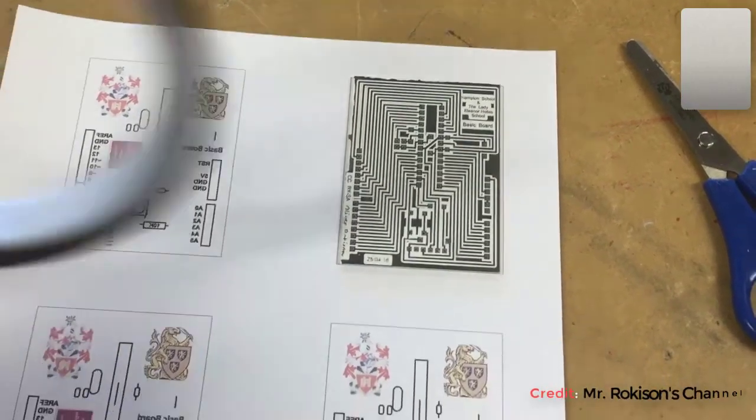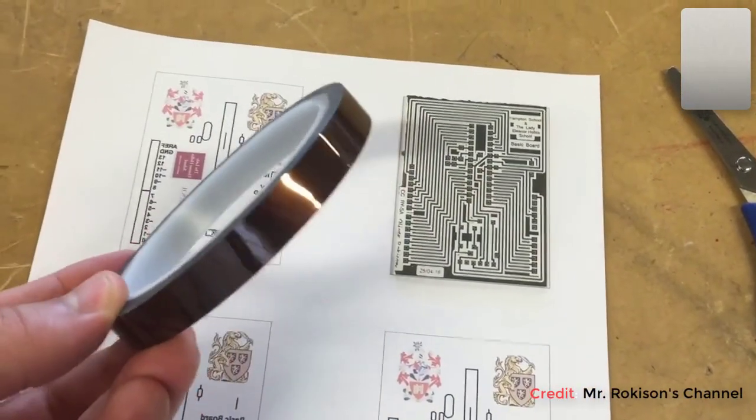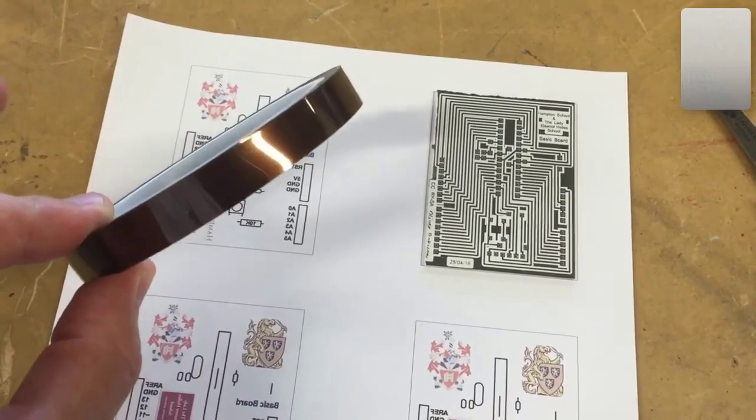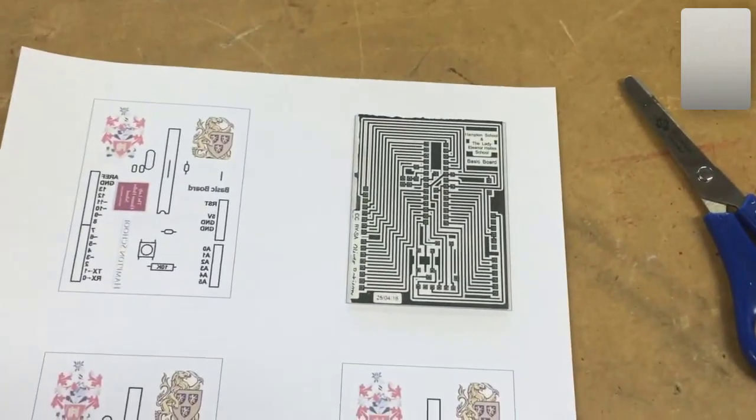Once we've lined that up perfectly, we're then going to use this Kapton Tape, which is a special heat resistant tape, and we're going to tape it down to the bit of paper.